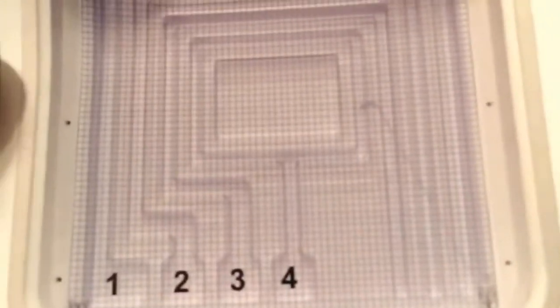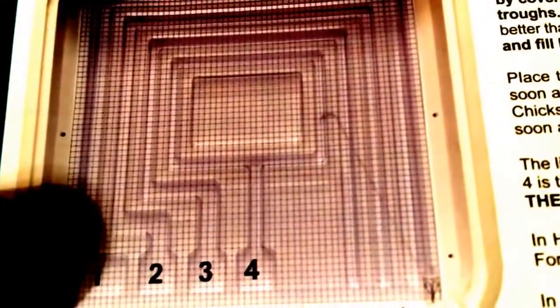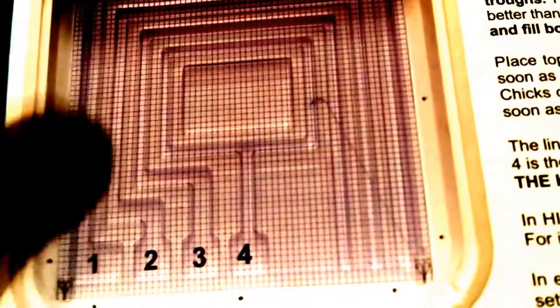The trays are numbered one, two, three, and four. They're not actually stamped with any number I don't believe. But you can see tray number one goes around the outside edge, so it is the longest, biggest tray, and then two, three, four obviously.